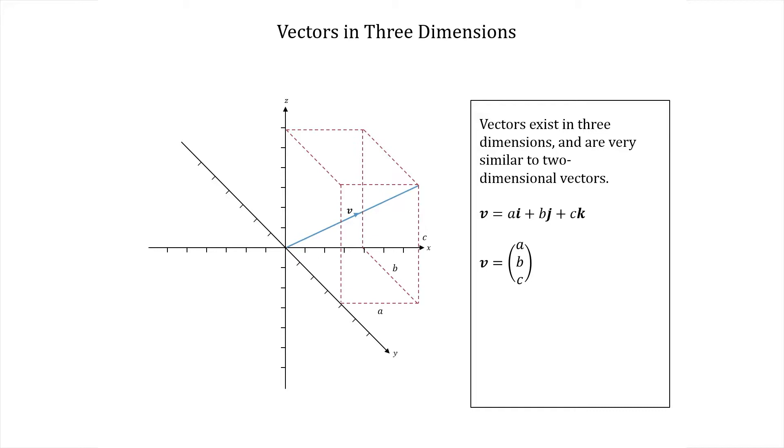Now, we can no longer describe the direction of V with a single angle, but we can still calculate its length, or magnitude. We can make a right angle triangle with V as the hypotenuse, where the other two sides are these two green lines. We know that the length of one of these lines is c, but what is the length of the other? Well, using Pythagoras' theorem, we can deduce that it is the square root of a squared plus b squared.